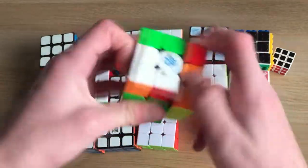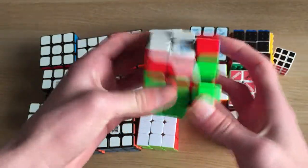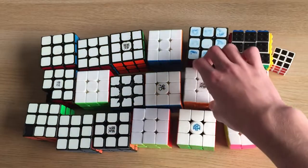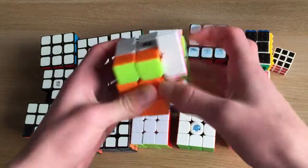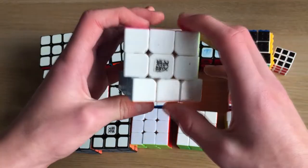Here we have the Gan 354, which I used as my main for a bit as well. Here we have a Weilong V2, which I try to learn blind on, hence the pen marks all over it.